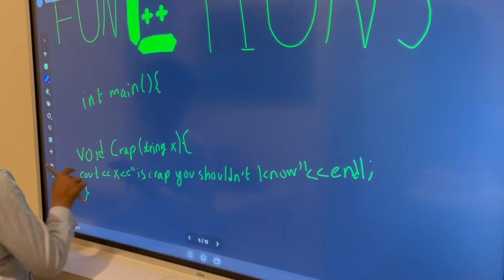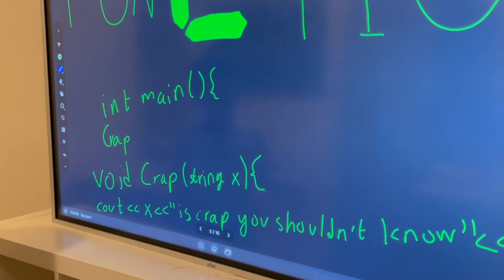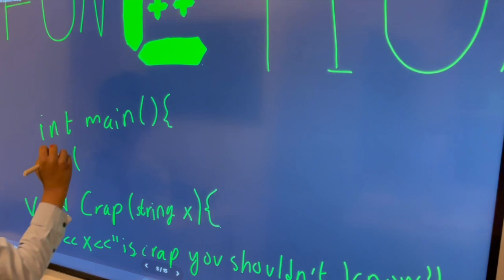So, instead we have to call it this way. We just do this. Crap! No, not crack. Crap! Crap! Crap! So, in the parameters, we put a value effect. Let's say, Crap!